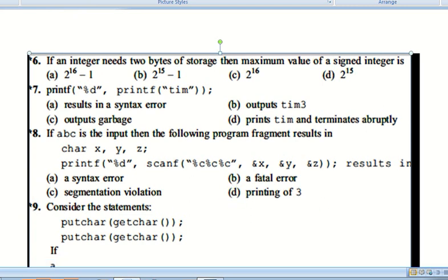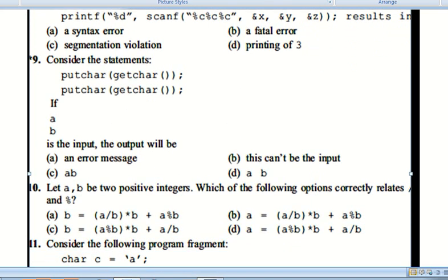Question number nine and ten: Consider the statement putchar(xxx) which uses getchar. If a, b is the input, the output will be - this cannot be input. Option B is the correct option.